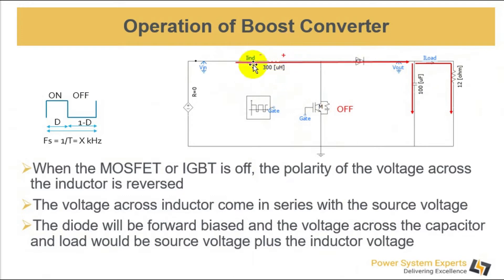When the MOSFET or IGBT is off, the polarity of the voltage across the inductor will be reversed because the direction of the current through the inductor has to be constant. This is the basic property of inductor. Now the voltage across the inductor comes in series with the source voltage. So the voltage appearing at the output will be V source plus V inductor. In this way the voltage is boosted on the output side.